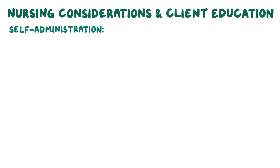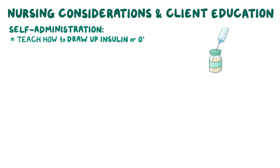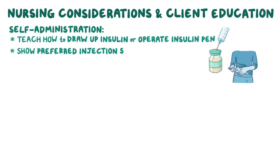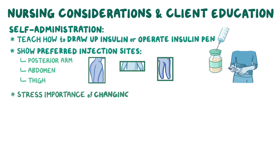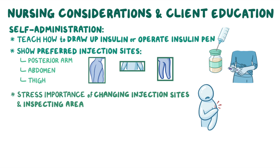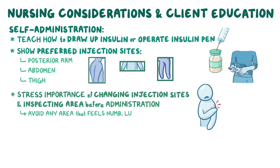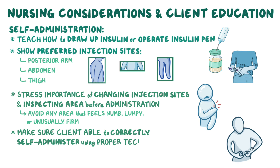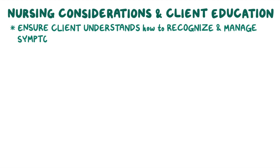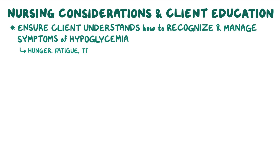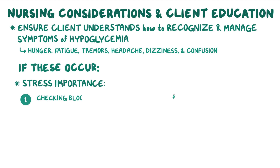Teach your client how to draw up their insulin or operate their insulin pen, and show them the preferred injection sites including the posterior arm, abdomen, and thigh. Stress the importance of rotating injection sites regularly, inspecting the area for bruising, broken skin, or tenderness before administration, and avoiding any area that feels numb, lumpy, or unusually firm. Ensure your client can correctly self-administer insulin using proper technique, and understands how to recognize symptoms of hypoglycemia such as hunger, fatigue, tremors, headache, dizziness, and confusion.